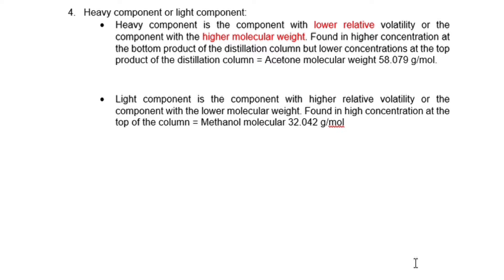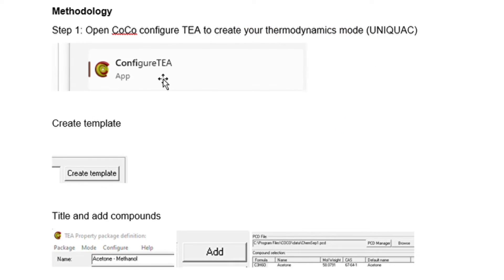Heavy components and light components are very important when dealing with a distillation column. Heavy components are usually those with a low relative volatility or higher molecular weight, and they are found in the bottom product. In this case, acetone is the one with the lower relative volatility or higher molecular weight, so we should expect it at the bottom. The light key component is the one with the higher relative volatility or lower molecular weight — methanol has a molecular weight of 32.042 g/mol and should be found at the top of the column. Pressure also plays a huge role: at low pressure, methanol will be found at the bottom, and at high pressure, methanol will be found at the top.